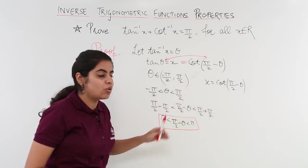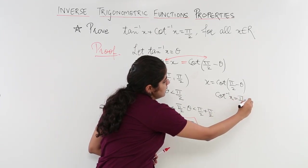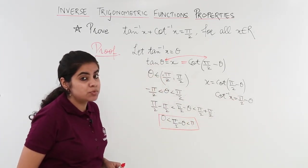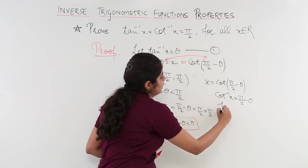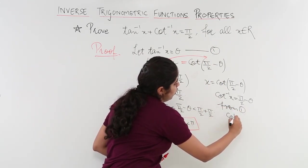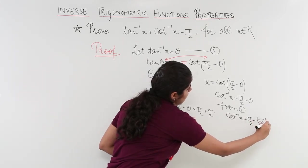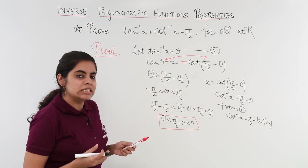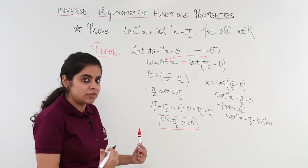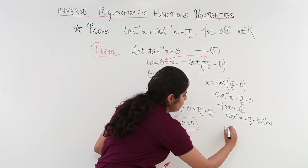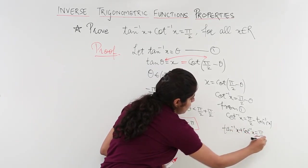Look at it more closely. If I have cot on the right-hand side, taking the inverse gives: cot inverse x is equal to pi by 2 minus theta. Now substituting theta as tan inverse x from equation 1, we get cot inverse x is equal to pi by 2 minus tan inverse x. Since I want it in plus form, rearranging gives: tan inverse x plus cot inverse x is equal to pi by 2.